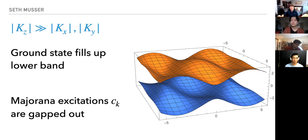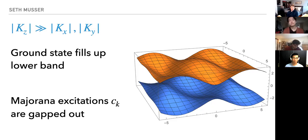Maybe there's some intuitive reason but I couldn't find anything. Complex fermions are used normally in parton constructions because you have a U(1) particle number. Since we're not doing any mean field here, Majoranas work exactly. But later on, when we can no longer exactly solve things in some limit, it will be really helpful to turn to the complex fermion parton construction.